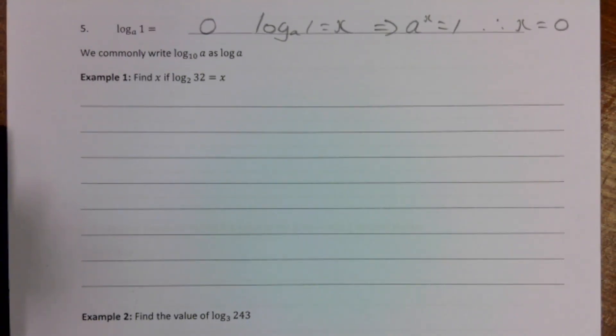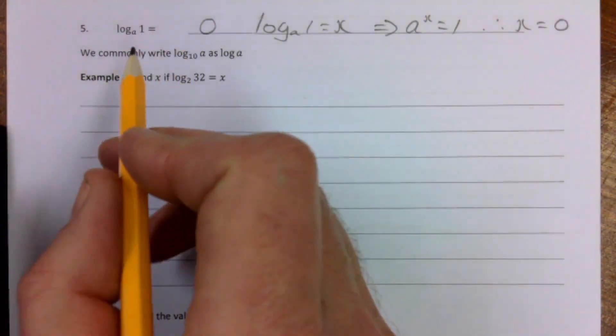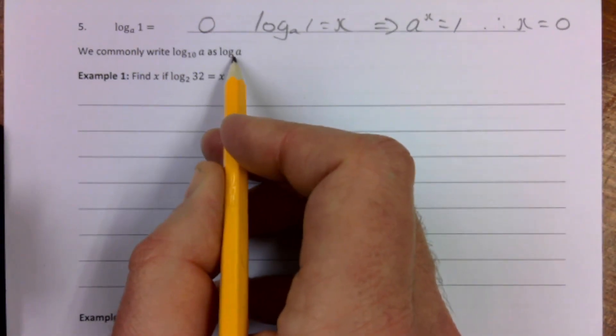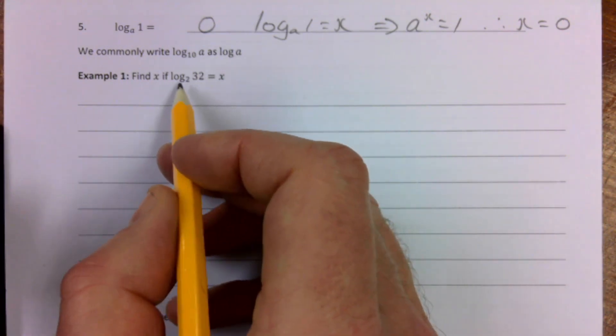This is ASPureNotes. We're in unit 9 logarithms. We've been through the laws of logs and we're now just going to be using the laws of logs to do some examples here. Just a wee note, we commonly write log to base 10 of a as log a. If we don't see any base written in there we would assume then it's going to be 10.